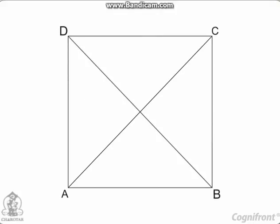Consider the given square ABCD. Now we'll draw the diagonals AC and BD intersecting each other at O.